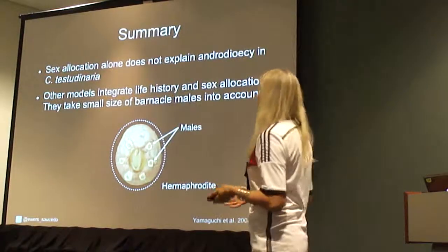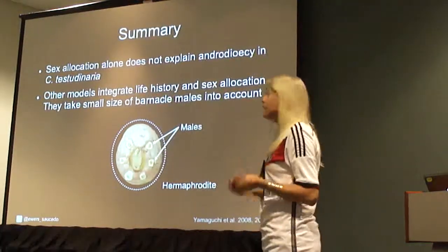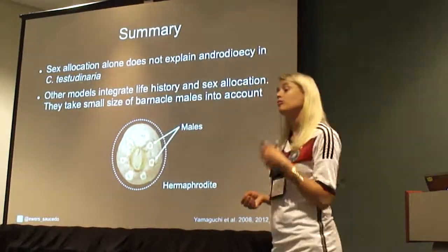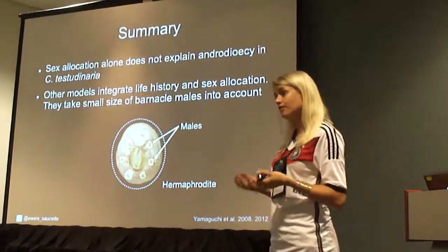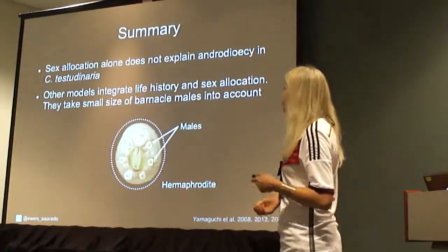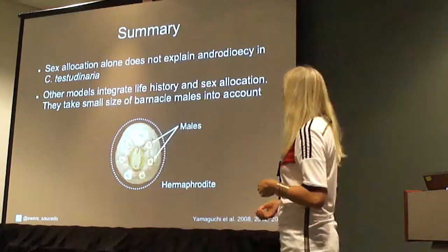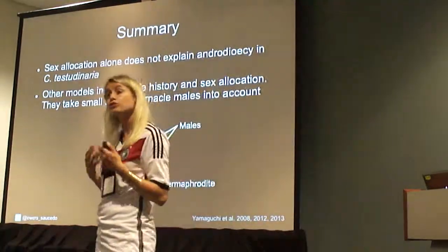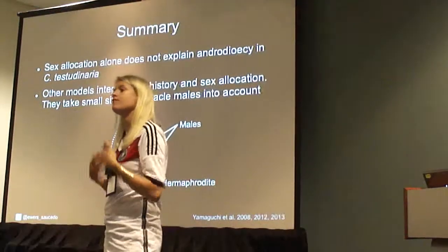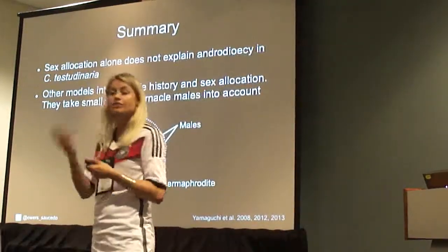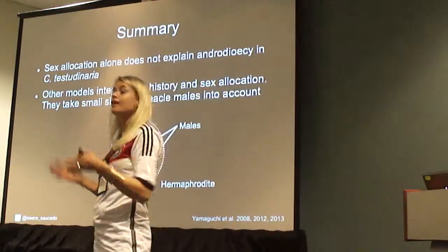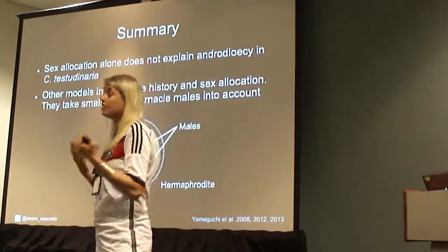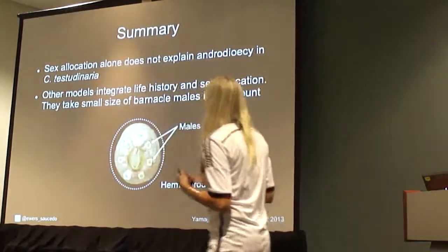In summary, we can conclude that sex allocation theory alone is unlikely to explain the androdioecious system in this barnacle. However, there are other models that combine life history and sex allocation theory. In particular, they take the small size of the barnacle males into account. Small size may mean that these males mature faster than the hermaphrodites. And if you think about where we find these barnacles — on sea turtles and horseshoe crabs which die off fast or shed their shells — it seems these barnacles don't live long. So it might be a fitness advantage to have this small size and mature early.